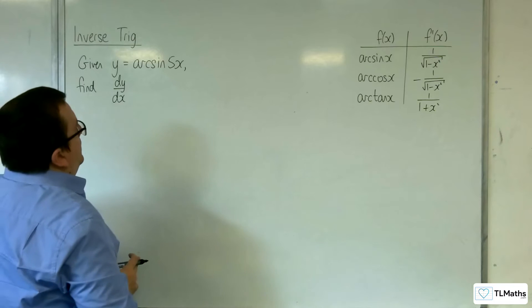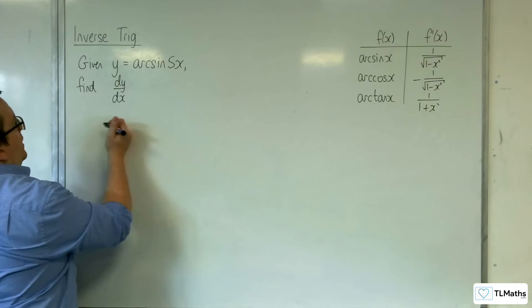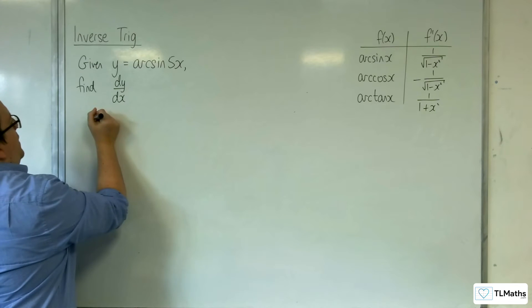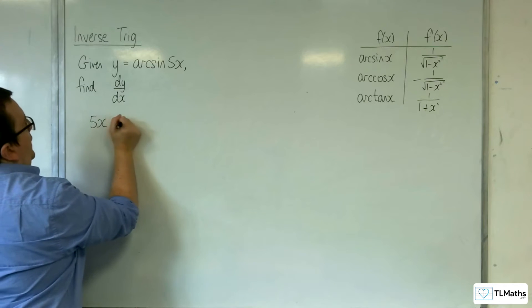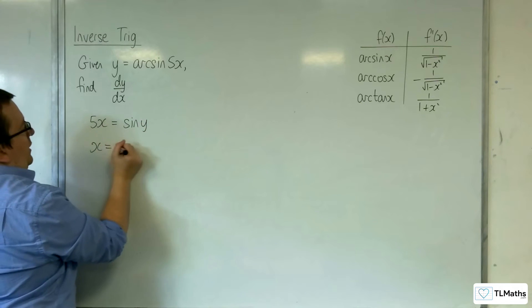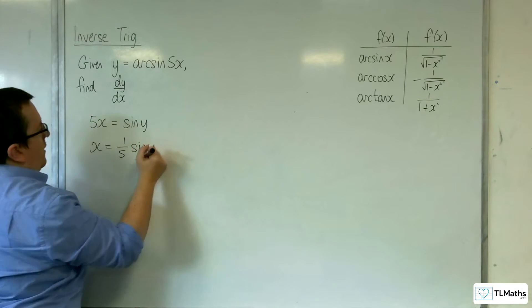using the previous method, would be to say, okay, if y is equal to arc sine of 5x, then that means that 5x is equal to sine of y. So x is equal to one-fifth sine of y.